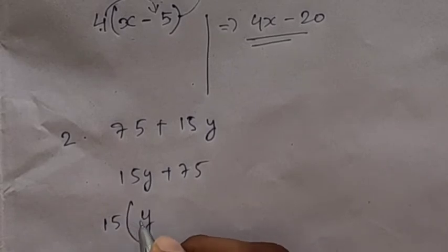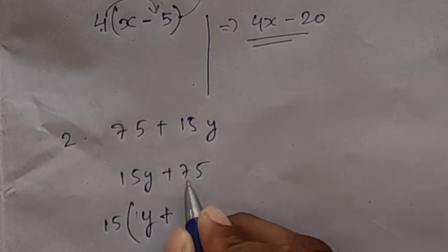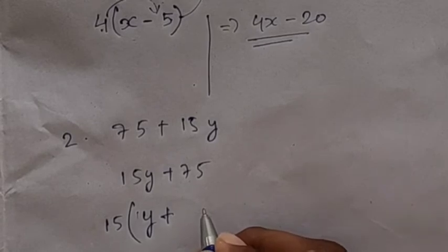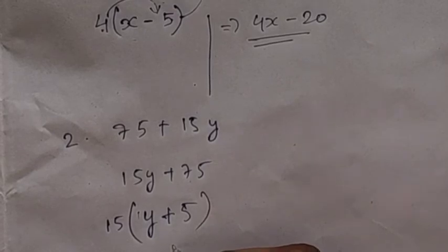Y. One y, we can write y. So y plus, now 75. If we multiply 5 times 15, how much it will be? 75. Clear students?